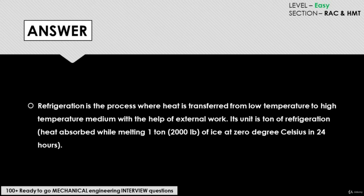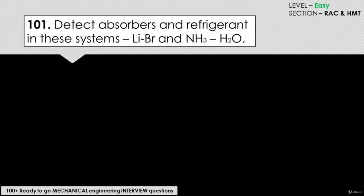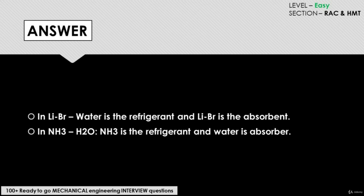The unit of refrigeration is the ton of refrigeration — that is the heat absorbed while melting one ton of ice at zero degrees Celsius in 24 hours. In the system shown, LiBr-H₂O uses water as the refrigerant and lithium bromide as the absorbent. In NH₃-H₂O, NH₃ is the refrigerant and water is the absorber.